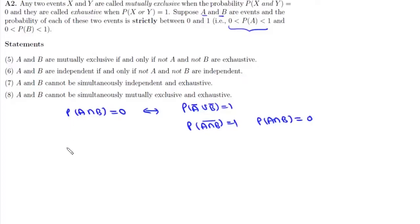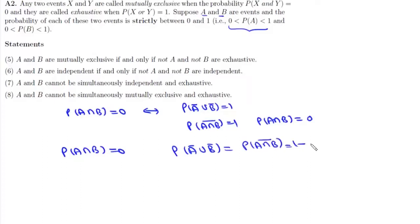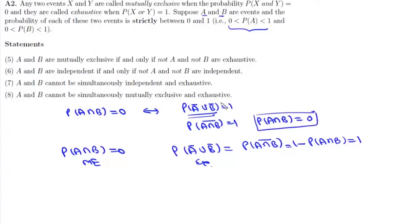We can prove it both ways. Starting from P(A ∩ B) = 0, we get P(A⁰ ∪ B⁰) = P(A ∩ B)⁰ = 1 − P(A ∩ B) = 1. So if A and B are mutually exclusive, then A⁰ and B⁰ are exhaustive. Conversely, if P(A⁰ ∪ B⁰) = 1, then P(A ∩ B) = 0, meaning A and B are mutually exclusive. Therefore statement 5 is correct.